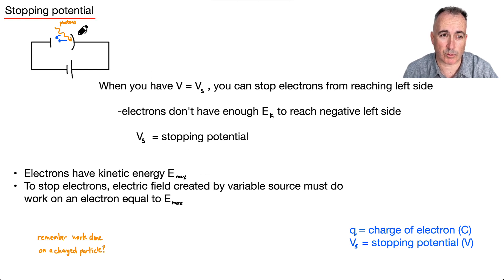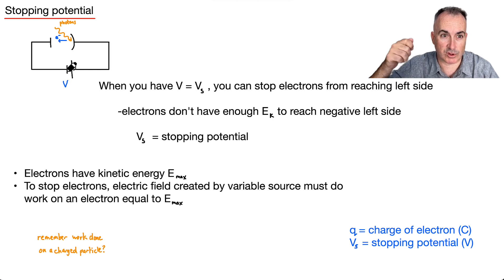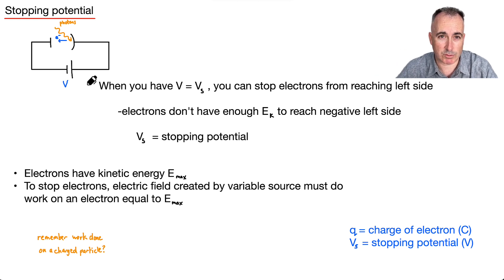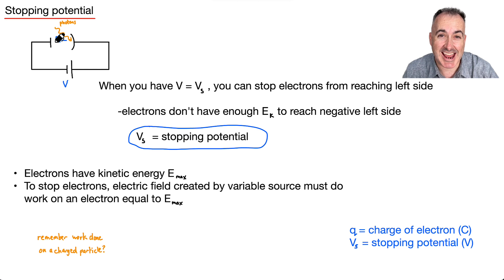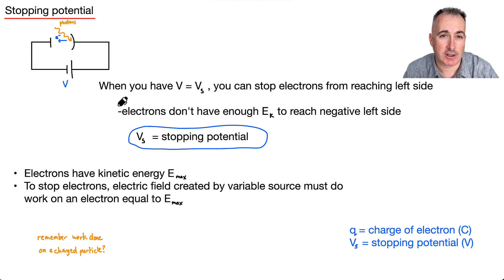The stopping potential is very important within the photoelectric effect. The idea is that you connect this in a circuit with a variable potential difference — you can change the voltage. You change it such that when you have Vs, the stopping potential, what happens is: the negative plate actually repels the electrons, and you're going to be able to stop those electrons from reaching the other side. You make it sufficiently negative that it repels these negatives, meaning the electrons won't have enough kinetic energy to reach that side.